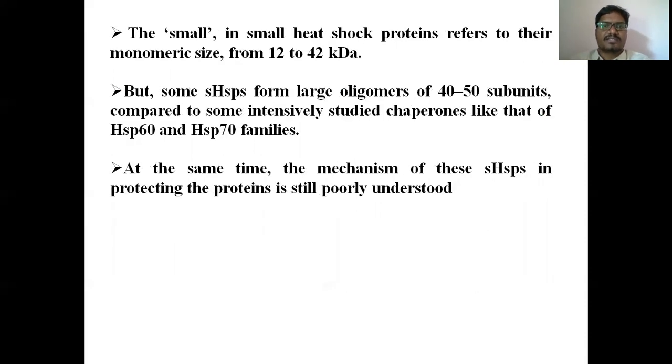First of all, what are heat shock proteins? Small heat shock proteins are the proteins which are referred to as small in size from 12 to 42 kDa. But some sHSPs form large oligomers of 40-50 subunits, compared to some intensively studied chaperones like that of Hsp60 and Hsp70 families. And in the present study, we had mined all the small heat shock proteins that are there in sorghum bicolor. As we all know, sorghum is a drought resistant crop, so we have chosen the crop and mined all the genes that are responsible for small heat shock proteins.